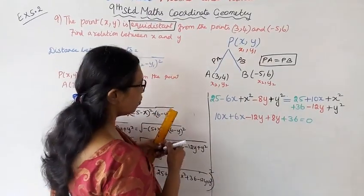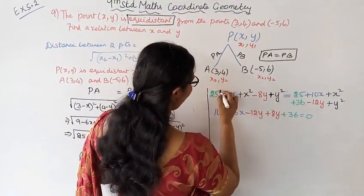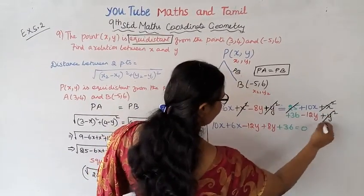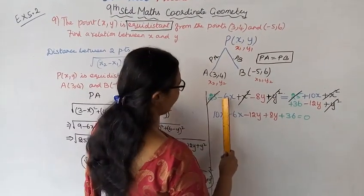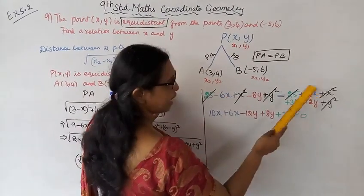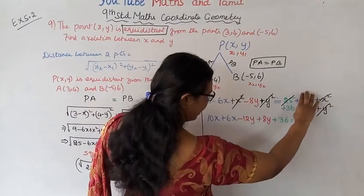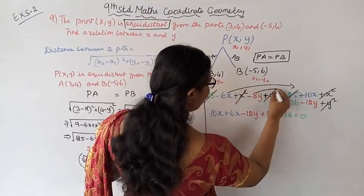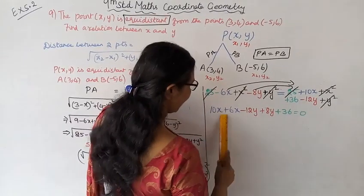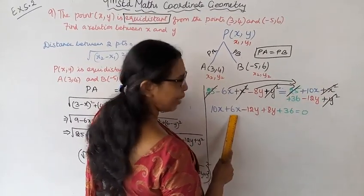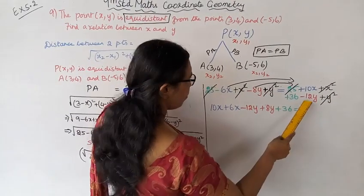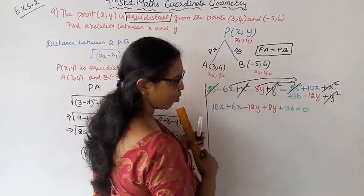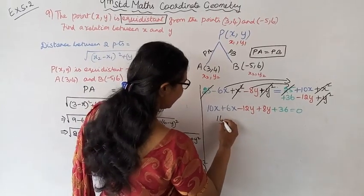25 and 25 cancel, x² and x² cancel, y² and y² cancel. Now -6x plus 10x gives 4x, -8y becomes plus 8y, minus 12y plus 8y gives -4y, plus 36.